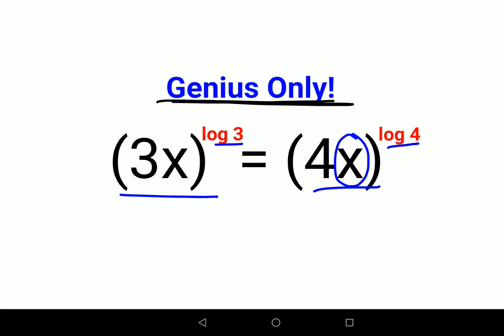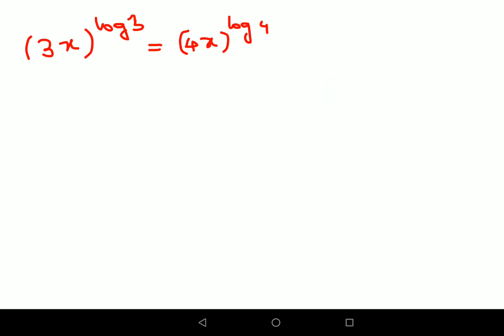Let's understand how to begin solving these kinds of questions. First step: let's take log on both sides. Log of (3x)^log 3 equals log of (4x)^log 4.